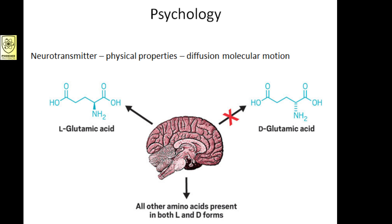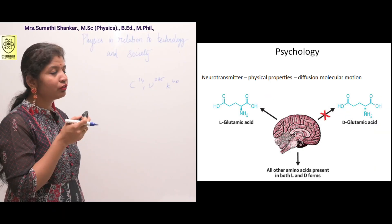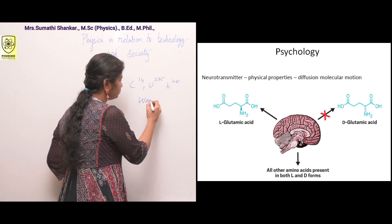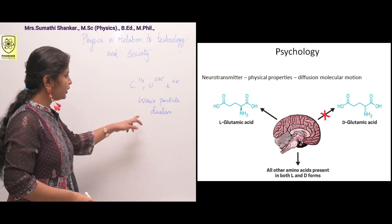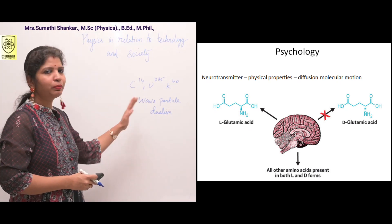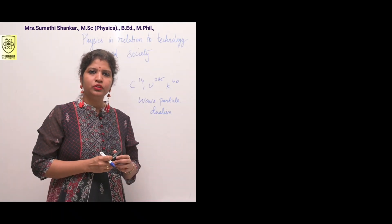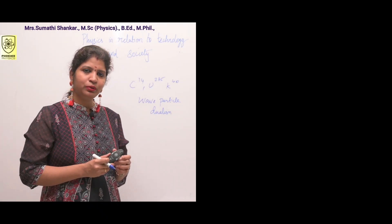Physics in relation to psychology. The movement of neurotransmitters is governed by diffusion and molecular motion. What are neurotransmitters? They are chemical messengers that transmit messages from a nerve cell to target cells. The target cell can be another nerve cell, muscle cell, or gland cell. Examples of neurotransmitters are amino acids such as glycine. Function of our brain is related to wave-particle dualism, which means it has both wave-like characteristics and particle-like characteristics.